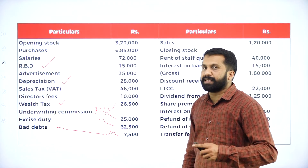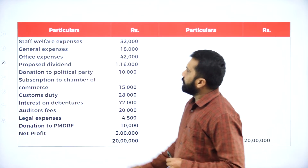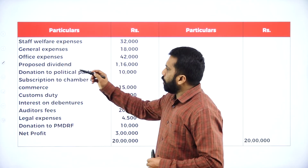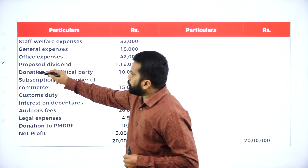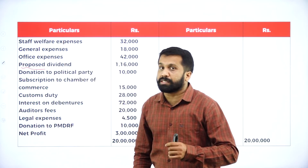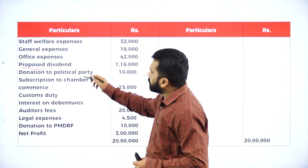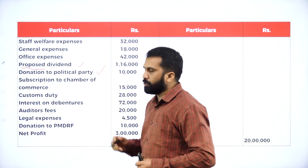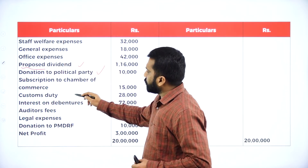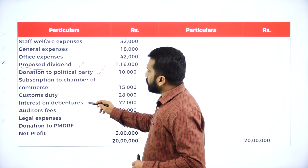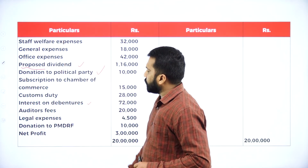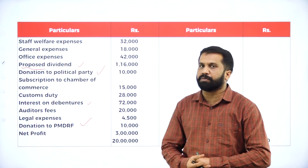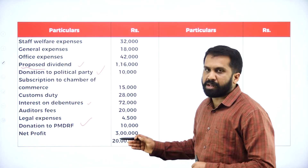Once you are done with this, the next items are: staff welfare expenses — part of your business; general expense — part; office expenditure — part of your business. Proposed — proposed means provisions or reserves, so we are supposed to consider. Donation to political party — yes. Subscription to chamber of commerce — no, that is business-related. Custom duty — no. Interest on debenture — yes. Auditor fees — no. Legal — no. Donation to Prime Minister Drought Relief Fund — yes, we are supposed to consider.